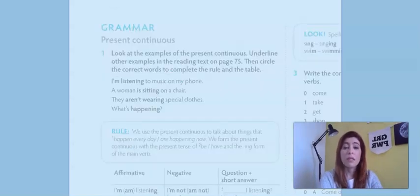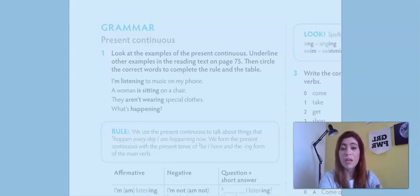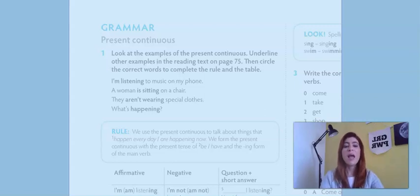Okay, so, now to understand how to use the present continuous, let's take a look at the rule that we have there. We use the present continuous to talk about things that are happening now. We form the present continuous with the present tense of be and the ing form of the main verb. That is the rule that we use to form the present continuous.